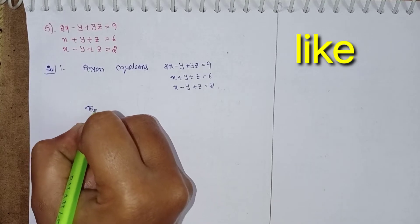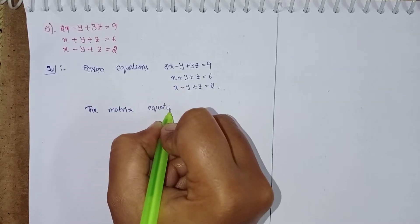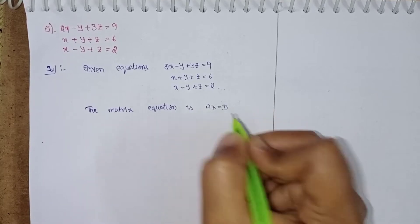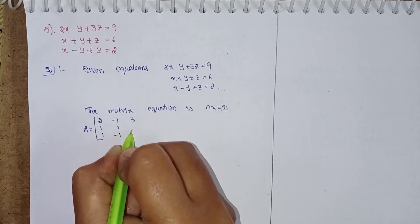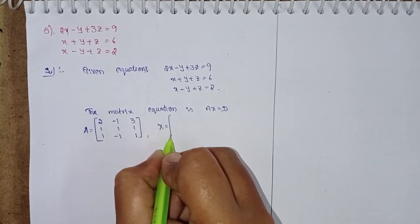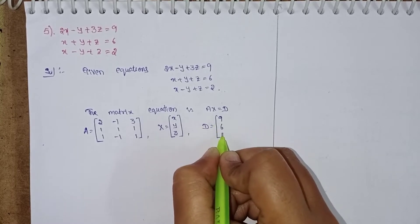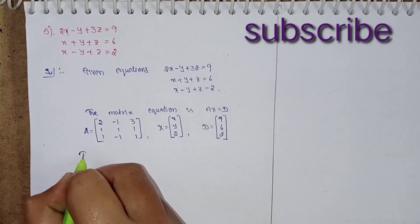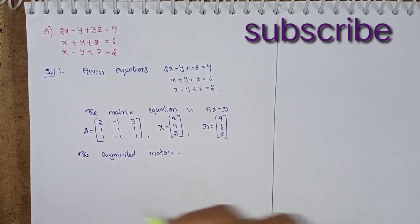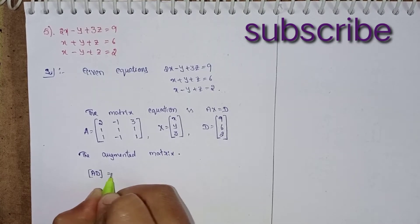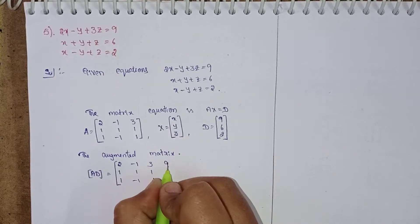You can write this in the form of AX equal to D. The matrix equation is AX equal to D. Here A equals the coefficient matrix with x-coefficients, y-coefficients, and z-coefficients. X equals the column matrix [x, y, z] and D equals the constants [9, 6, 2]. Now write the augmented matrix [A|D].